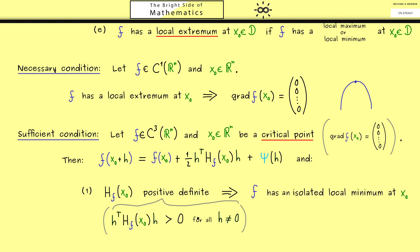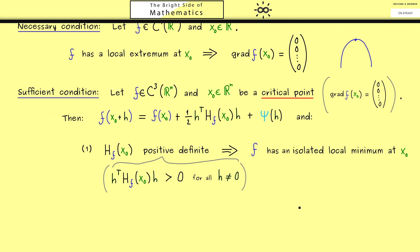Moreover, because of our strict inequality here, we also get an isolated local minimum. So in summary, this condition here, together with the condition of the Hessian matrix, guarantees the existence of a local minimum. And now you might already guess, we can also flip this condition here to get a local maximum at x_0. In other words, now the Hessian matrix should be negative definite.